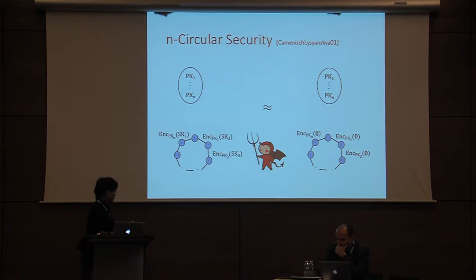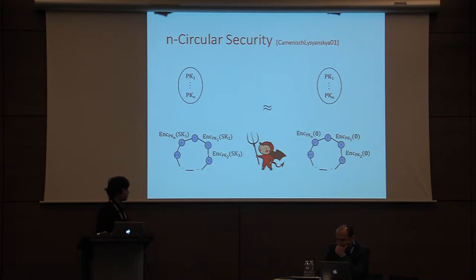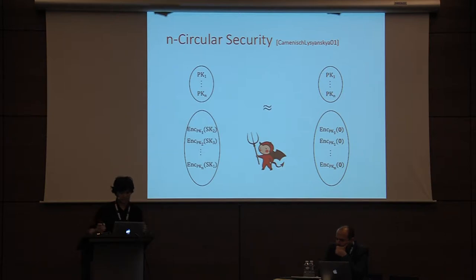It has formalized as follows. There are n public keys and n secret keys. In n-circular security, the adversary should not be able to distinguish between the n public keys along with an encryption key cycle — that is, encryption of the second secret key under the first public key, third secret key under the second public key, and so on — versus encryption of an all-zero string.